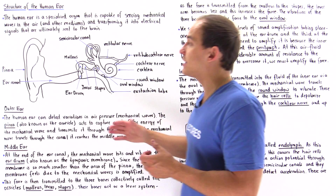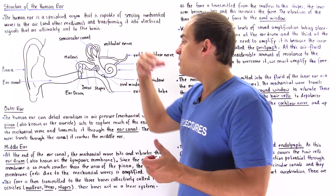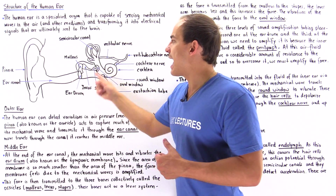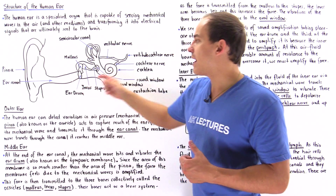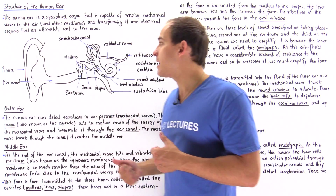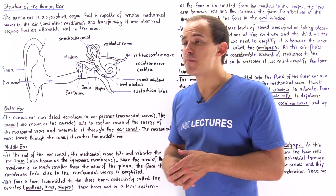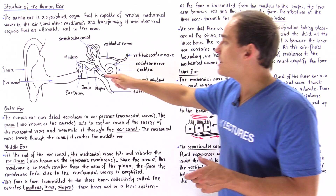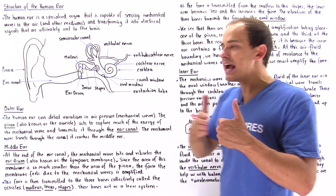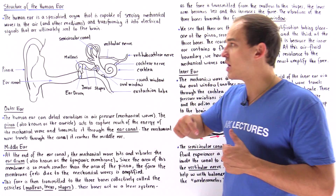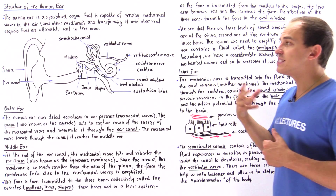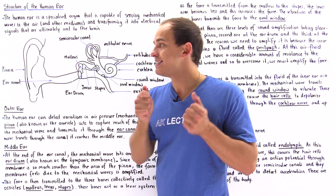We amplify the force at the pinna, then at the eardrum, and then at the three bones — the malleus, the incus, and the stapes. At the pinna, we amplify by about a factor of two. At the eardrum, we amplify by about a factor of 15. And at the three bones, we amplify by about a factor of three. Together, that gives us 2 × 15 × 3, so about 90 times as much, which is equivalent to about 20 decibels.